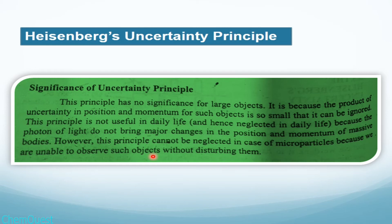The electron's wavelength is very small — in negative powers — and if we want to observe the electron, we need radiation whose wavelength is even smaller than the electron's wavelength. This means that radiation will be highly energetic.